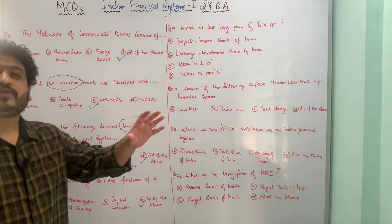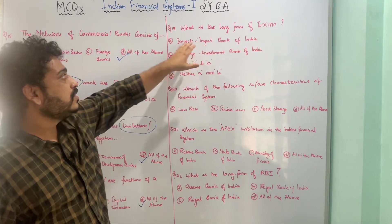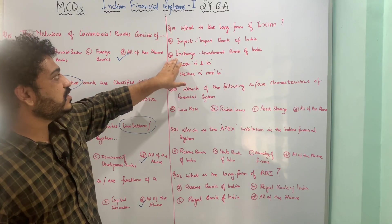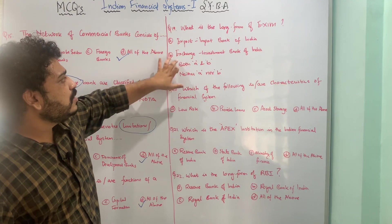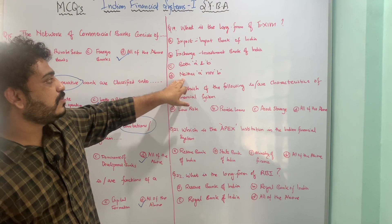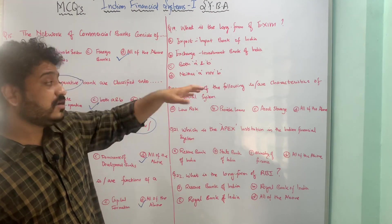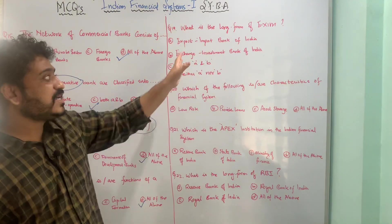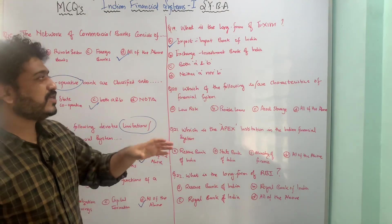The next MCQ asks for the long form of EXIM. The options are: A — Export Import Bank of India, B — Exchange Investment Bank of India, C — both A and B are correct, and D — neither A nor B. The correct answer is Export Import Bank of India, which is option A.